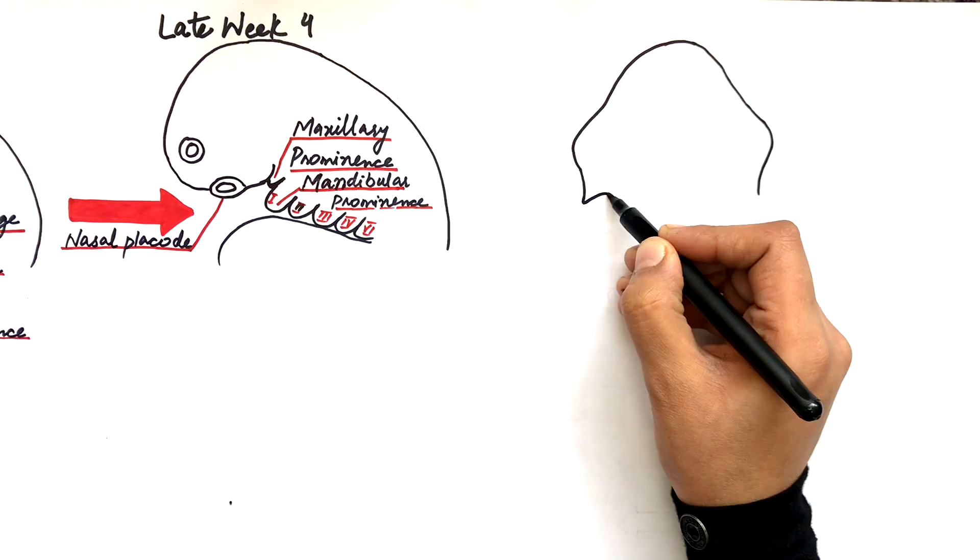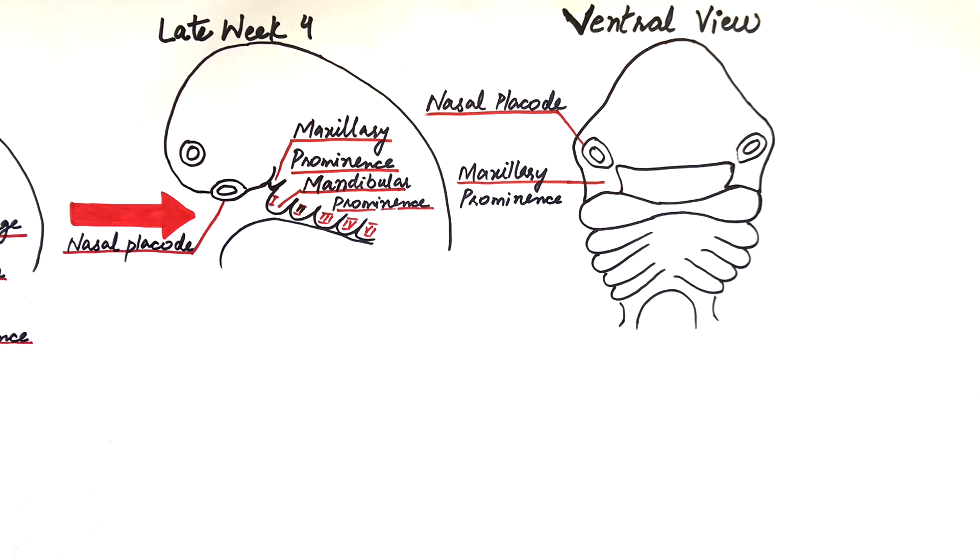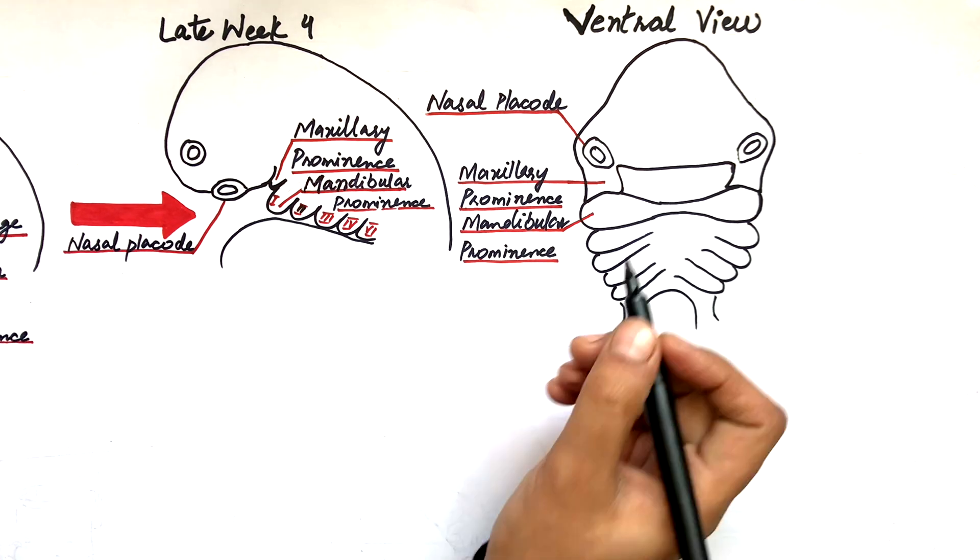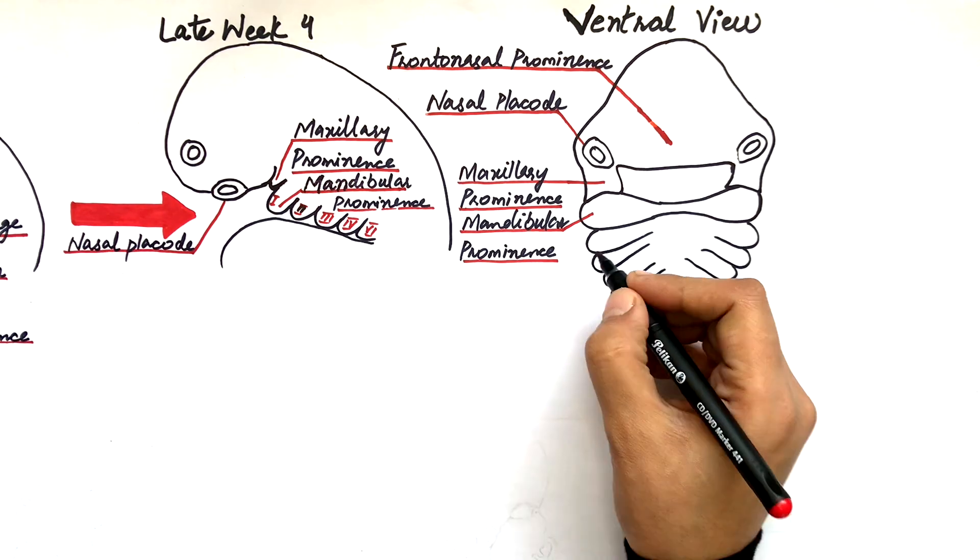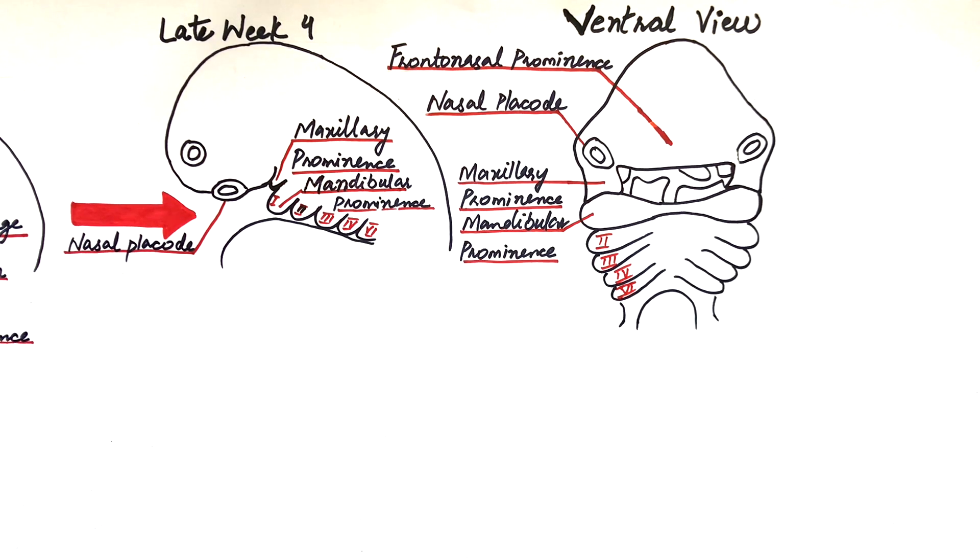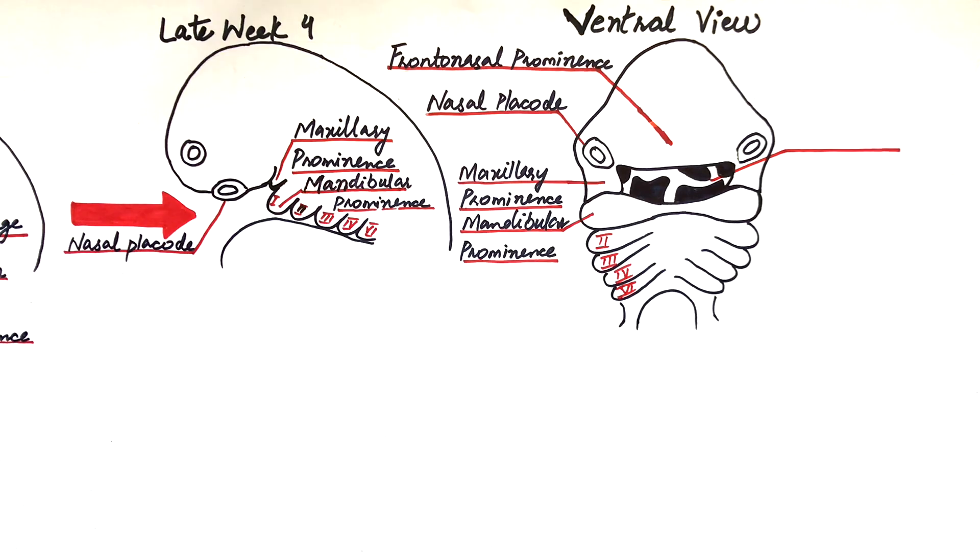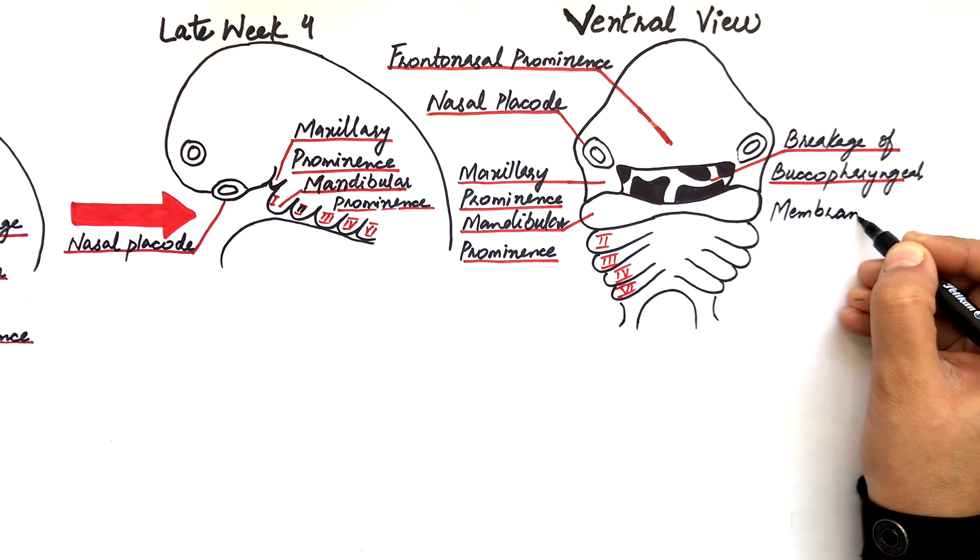Now let's turn this embryo towards the right and have a frontal or ventral view of the nasal placodes, the maxillary prominence and the mandibular prominence. The part of the frontal prominence present in between the nasal placodes is now called the frontonasal prominence. Please note that the prominences are also called the processes. The buccopharyngeal membrane which was present between the stomodium and the foregut disintegrates now, and the stomodium becomes continuous with the foregut.